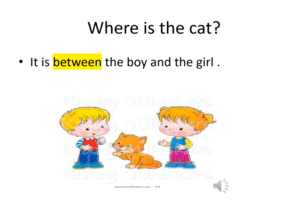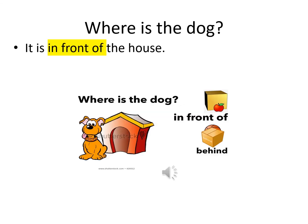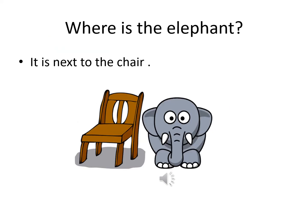Where is the cat? It's between the boy and the girl. Where is the rat? It's behind the box. Where is the dog? It's in front of the house. Where is the elephant? It's next to the chair.